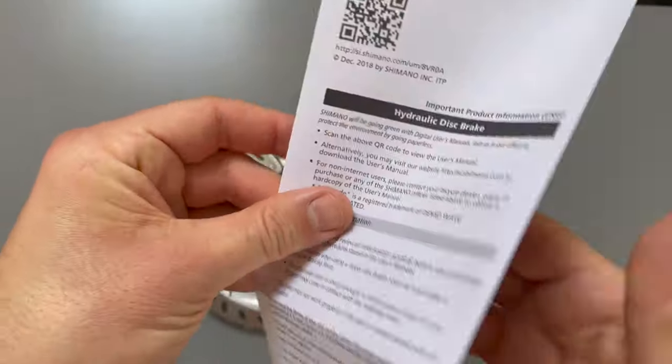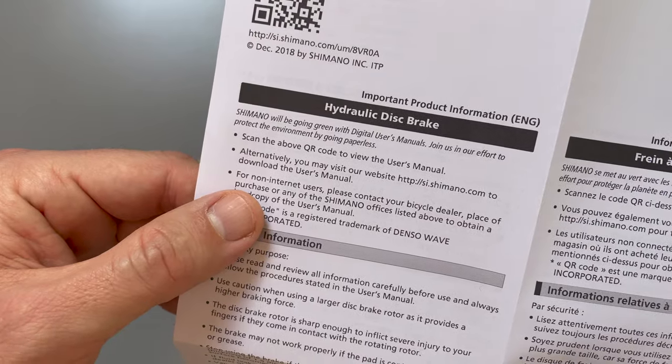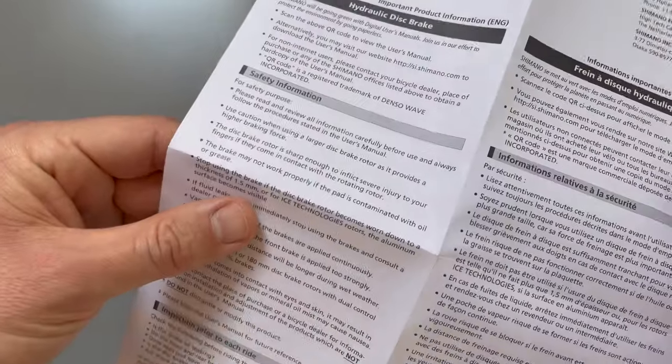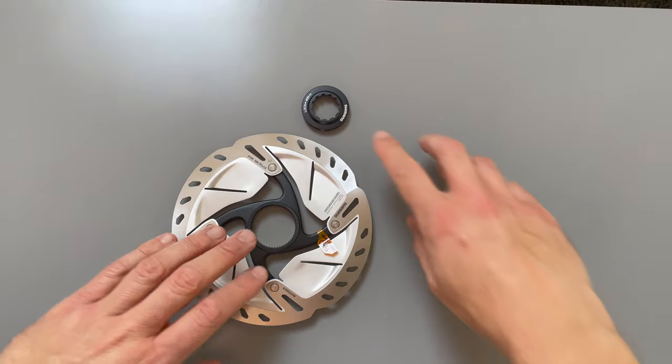As you can see we have some instructions here which say go to the website. I'm pretty sure they should start printing this on the box now. It makes more sense to me rather than printing something out and wrapping it up in cellophane, so that's what I'd advise Shimano to do.